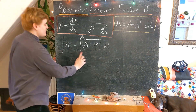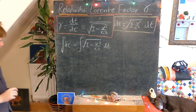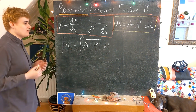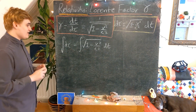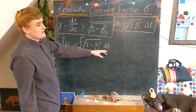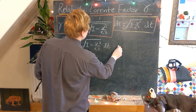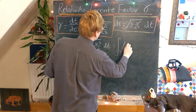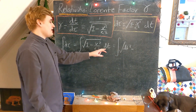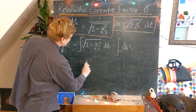We can actually work a bit more with this expression and realize it's talking about something quite fundamental. I'm now going to do some manipulations that might start feeling a bit uncomfortable, but just bear with it and you'll see where it's leading. First of all, I'm going to bring this dt inside the square root, where it's going to become dt squared.